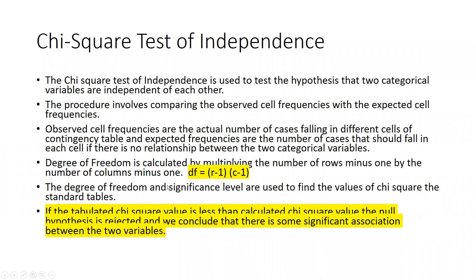The chi-square test of independence is used to test the hypothesis that two categorical variables are independent of each other. The procedure involves comparing the observed cell frequencies with the expected cell frequencies. Observed cell frequencies are the actual number of cases falling in different cells of the contingency table, and expected frequencies are the number of cases that should fall in each cell if there is no relationship between the two categorical variables. I will also show you how to calculate the degree of freedom, which determines when to accept or reject the null hypothesis.